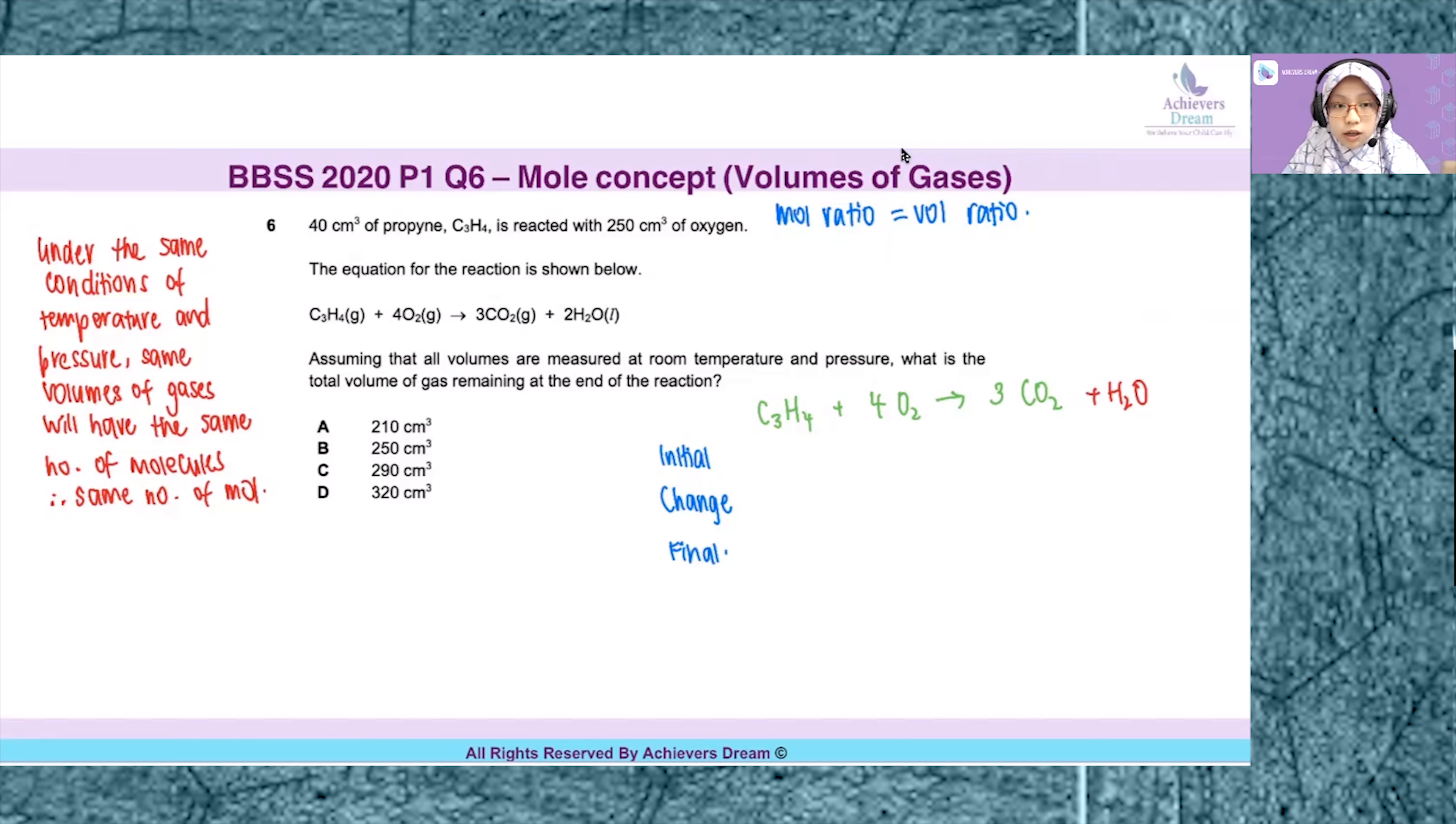let's take a look at Avogadro's law. I've already written out the definition. Under the same conditions of temperature and pressure, same volumes of gases will have the same number of molecules, meaning the same number of moles. This translates to having the mole ratio from the balanced chemical equation be the same as the volume ratio needed for the reaction to occur. What exactly am I talking about? I will show you an example